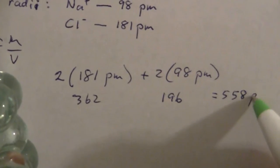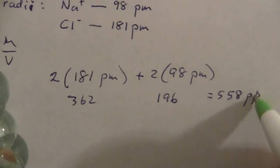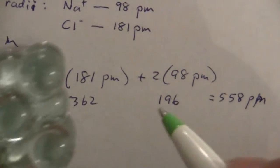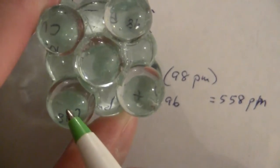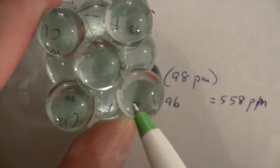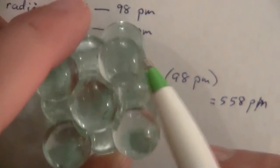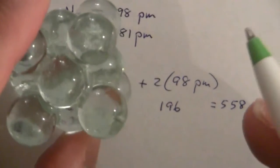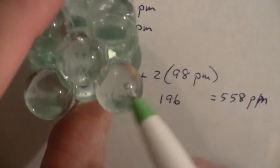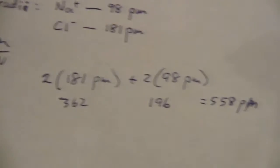So 558 picometers is the distance from, or the distance of one side, the length of one side of our unit cell. So what we need to do is cube that to find the volume of the cell.